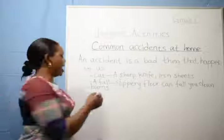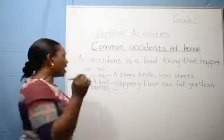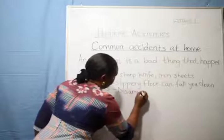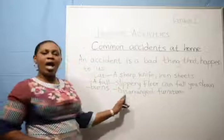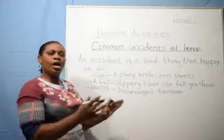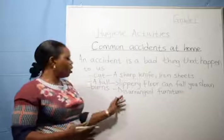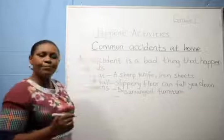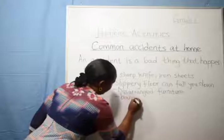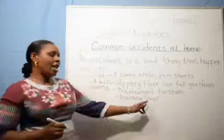What else can make you fall down? Disarranged furniture. So when the furniture is not well arranged, it can make you fall. Make sure at home the seats, sofa set, and chairs are well arranged, because when the furniture is not well arranged you can fall down. Also, you can fall when you step on a banana peel — banana peel can make you fall down.